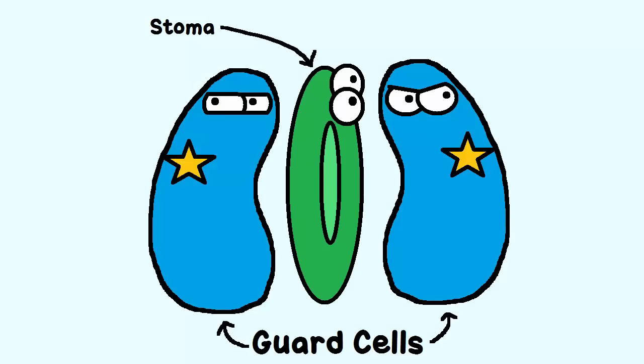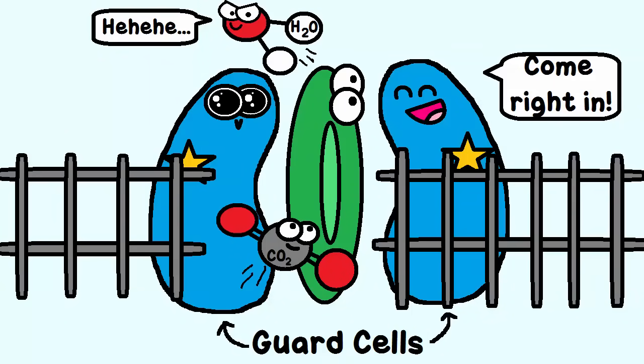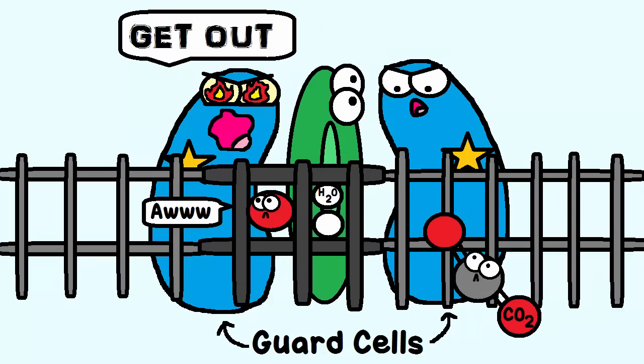It does this with the help of guard cells. If guard cells have the stomata open, it gets the gases it needs, but it can lose water. If guard cells have the stomata closed, it gets to save its water, but then it can't get any gases.